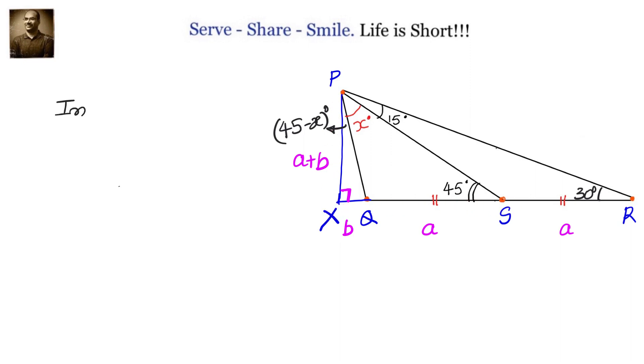Now let us go to the big triangle PXR and see what is tan 30 degrees. Tan 30 degrees in this triangle is given by opposite by adjacent, that is PX by XR. What is PX? A plus B. What is XR? B plus 2A or 2A plus B.